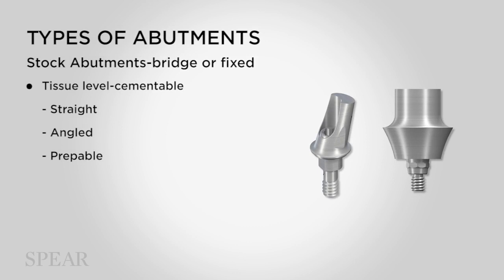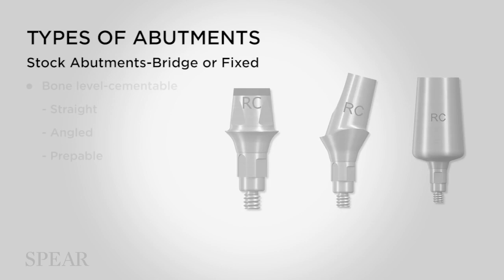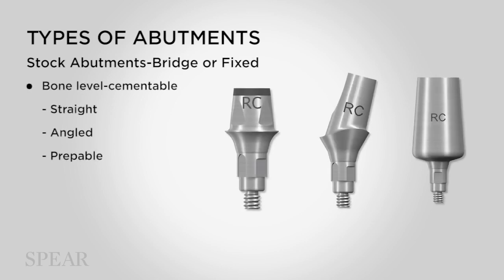Using a stock abutment on a bone-level implant makes it very difficult to get optimal results. When thinking about bridges or fixed restorations, there are also cementable abutments with a slightly different configuration. The abutments shown are for tissue-level implants — they go down and completely cover the platform of the implant, and the restoration is cemented on top. There's also a preppable abutment for bridges. For bone-level implants with bridges or short-span fixed appliances, there are also stock cementable abutments — straight, angled, and preppable — and they're available in zirconia as well.